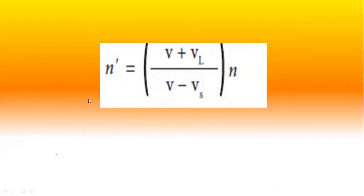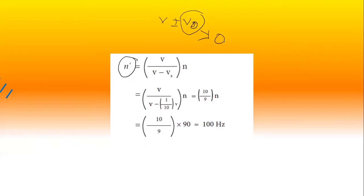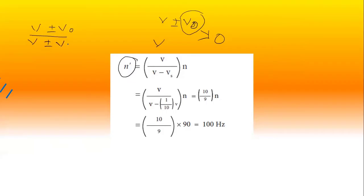We know the equation for the apparent frequency. N dash is equal to V plus or minus V_O, divided by V plus or minus Vs, into N. Since the observer is stationary, we put V_O as zero. The general formula is V plus or minus V_O by V plus or minus Vs. You have to analyze whether the observer is moving or whether the source is moving.